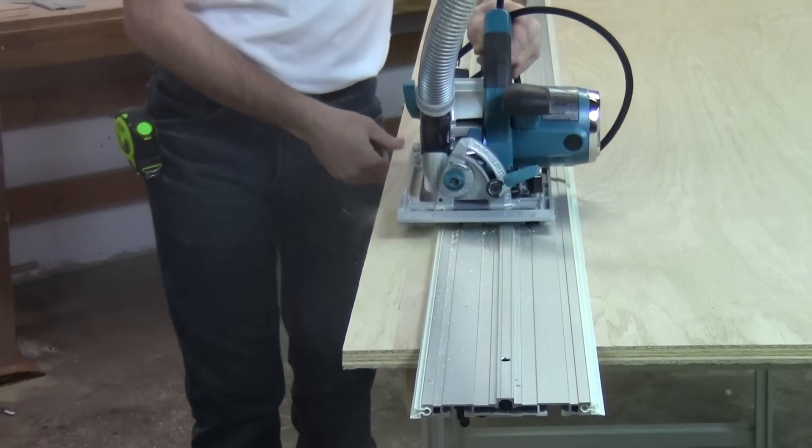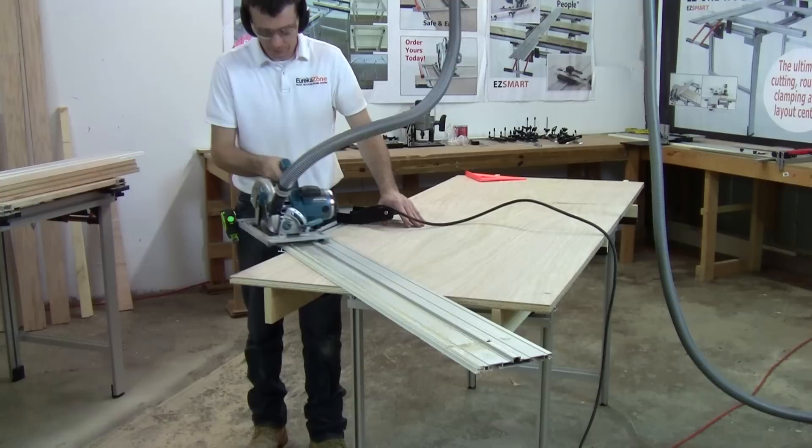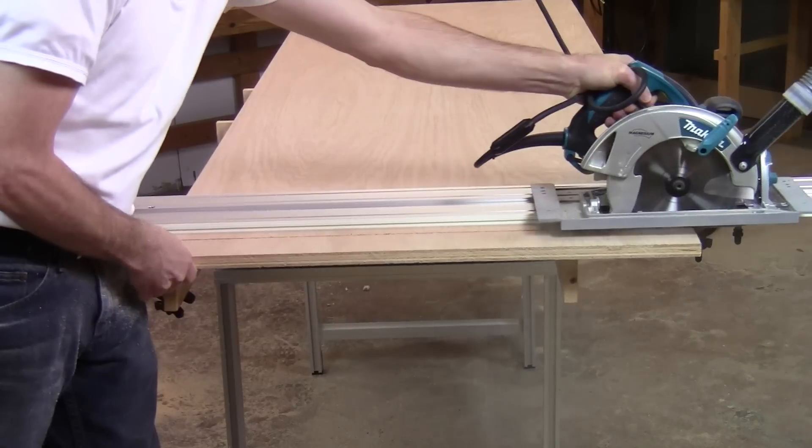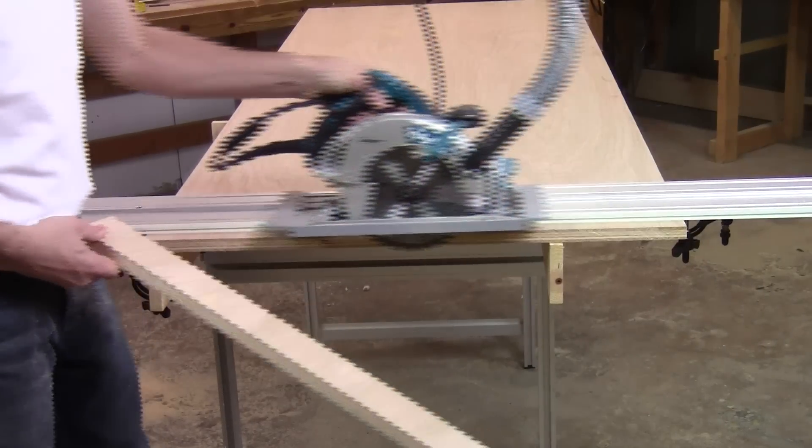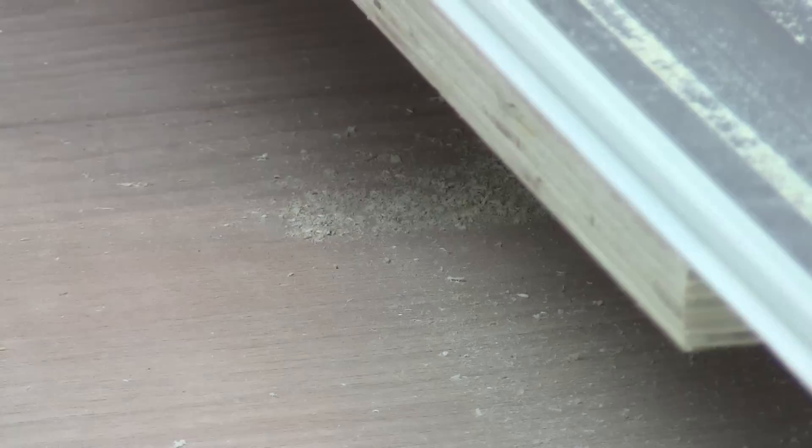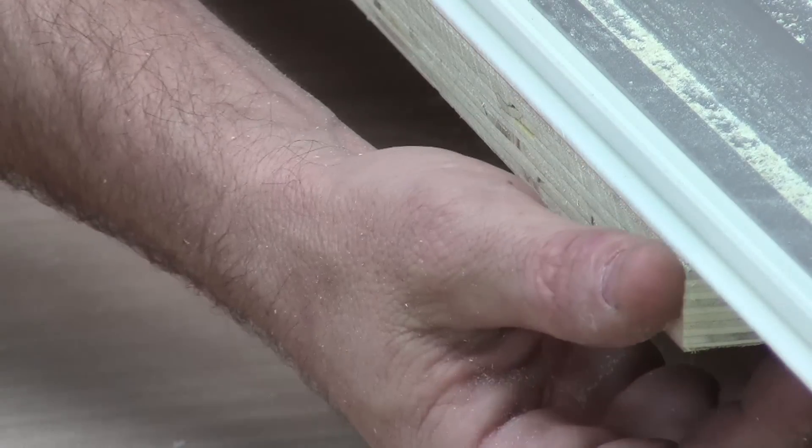The saw glides effortlessly down the rail for rip cuts, cross cuts, and angle cuts. Thanks to the guide rail's zero clearance edges and the chip-free inserts on the bottom of the base, the cut quality is far better than typical table saws.